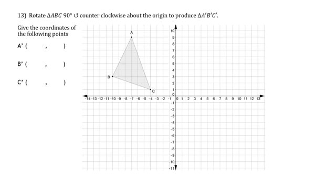The final question asks us to take triangle ABC and rotate it 90 degrees counterclockwise about the origin to produce triangle A'B'C'. There is a mapping rule for 90-degree rotations — clockwise or counterclockwise — and I recommend using patty paper to visualize it, which will be available in class and during testing.